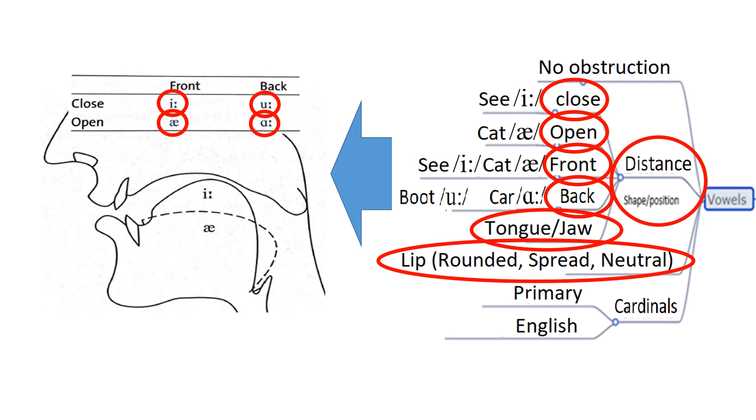Vowels can be classified according to the vertical distance between the tongue and the roof of the mouth, and the part of the tongue involved in the production process. So they can be either close or open depending on the vertical distance, front or back depending on the part of the tongue involved. The tongue and the jaws play an important role in these processes.